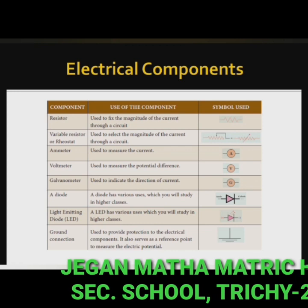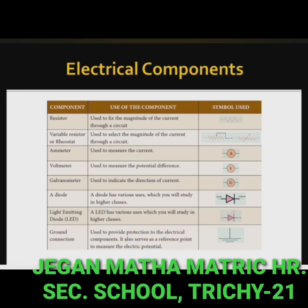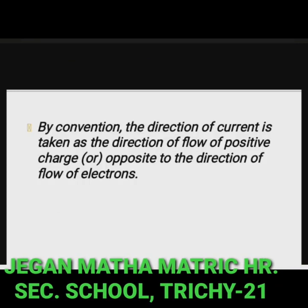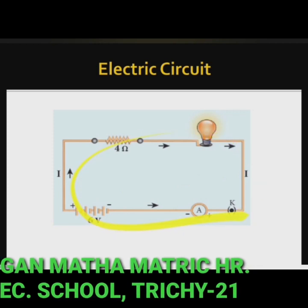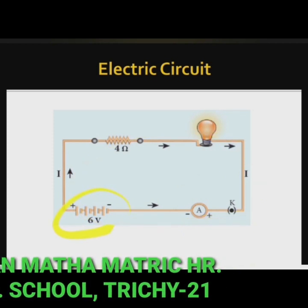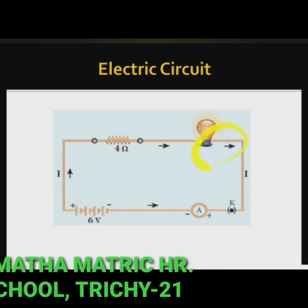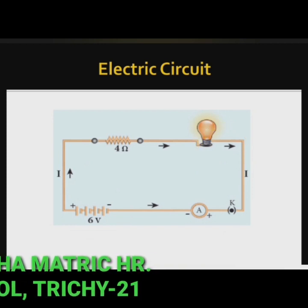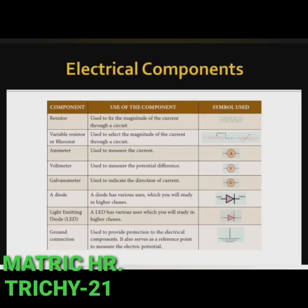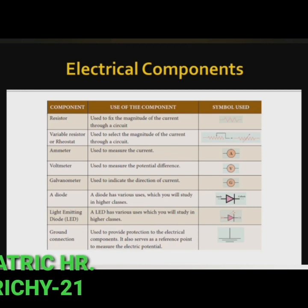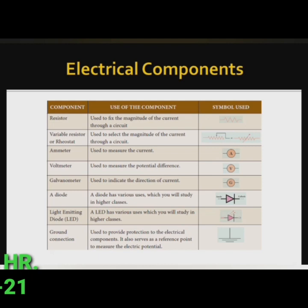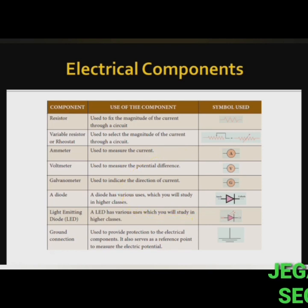Electrical components: the electric circuit consists of different components such as a battery, switch, and a bulb. All these components can be represented using certain symbols. It is easier to represent the components of a circuit using their respective symbols. The symbols used to represent some commonly used components, along with their uses, are summarized in a table.